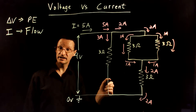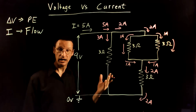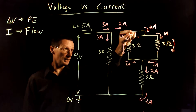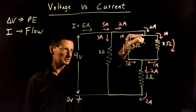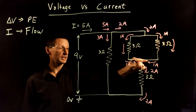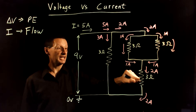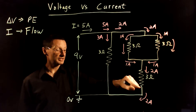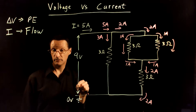Whatever goes in must come out. If you think of these like hoses or pipes — the pipes split, and if you have two gallons of water going into that junction with one gallon going each way, they're going to meet up and you'll get all two gallons coming out. And if all two gallons go into this hose, then all two gallons must come out of that hose.